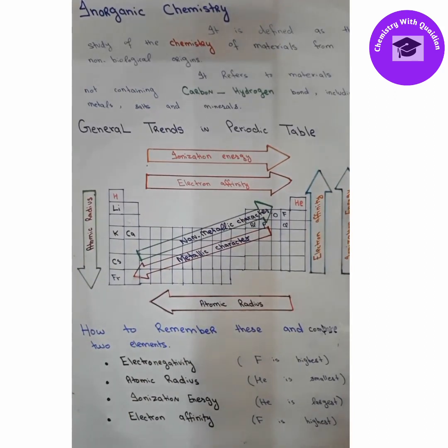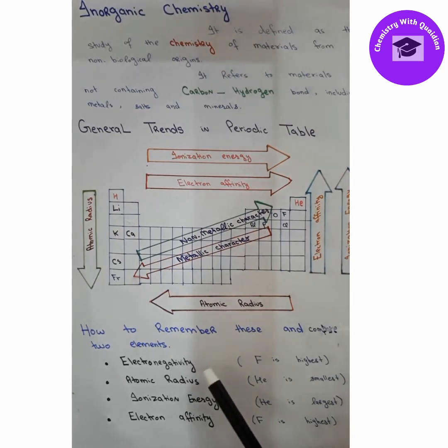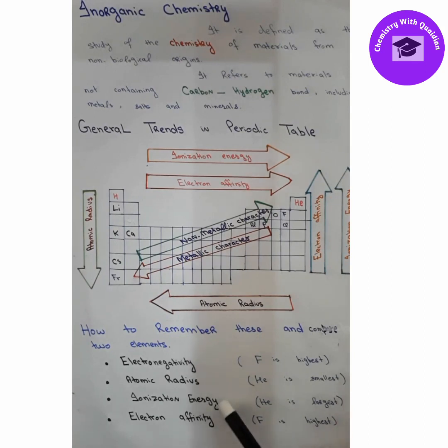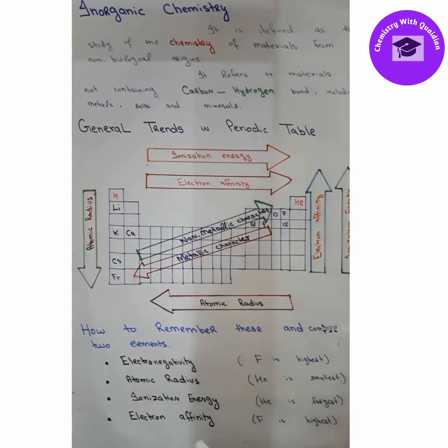Now let's move to general trends in the periodic table. The most commonly studied trends are electronegativity, atomic radius, ionization energy, and electron affinity.